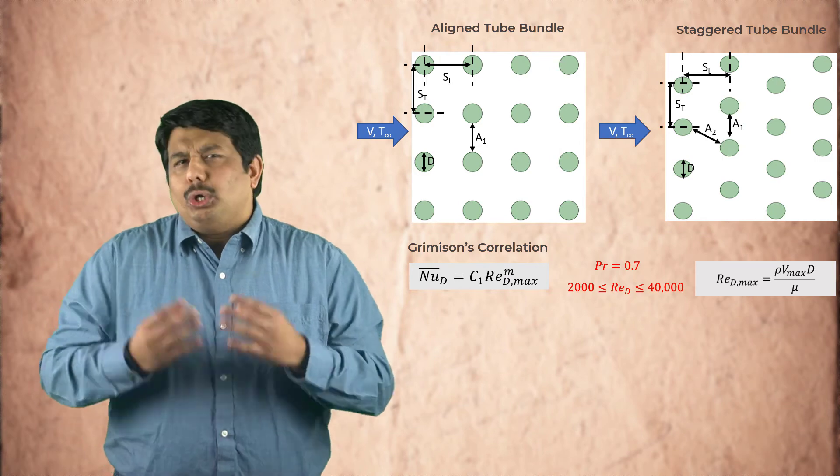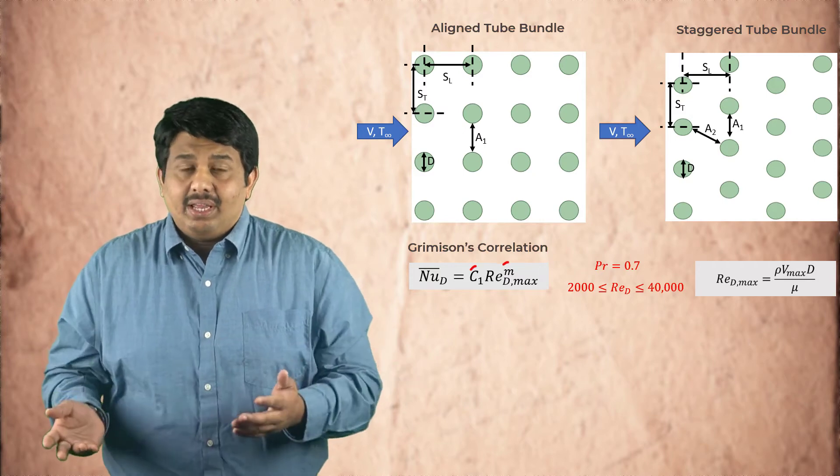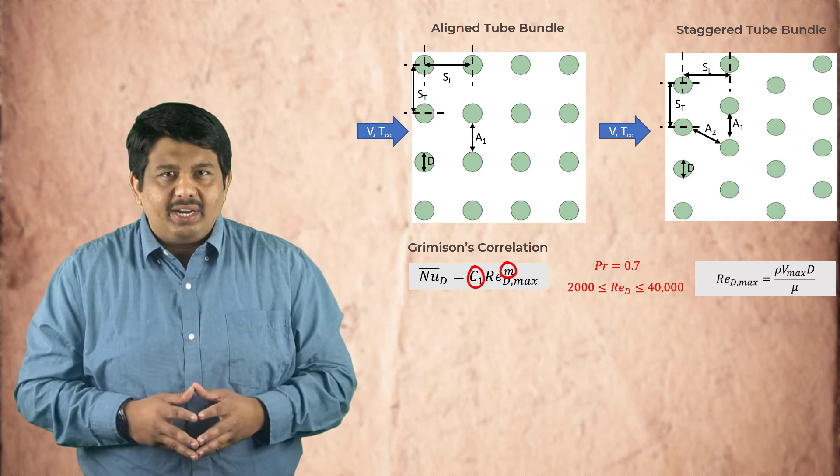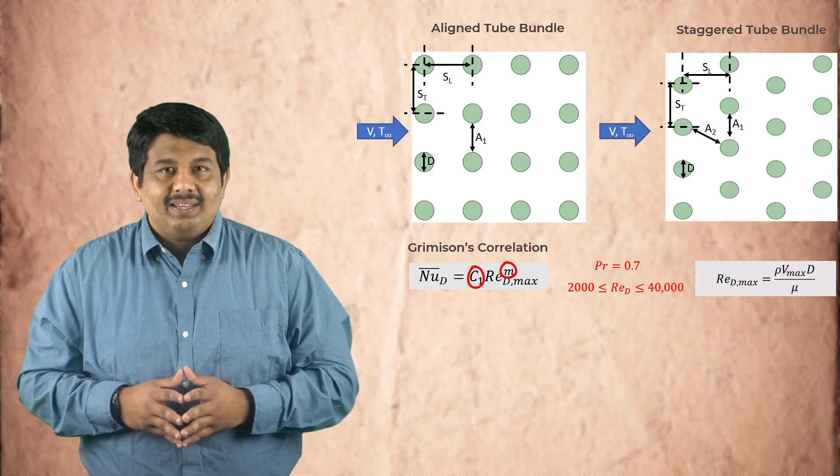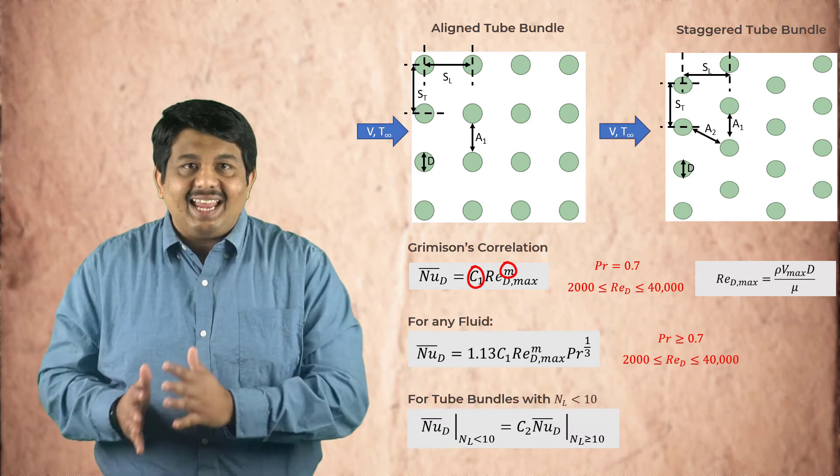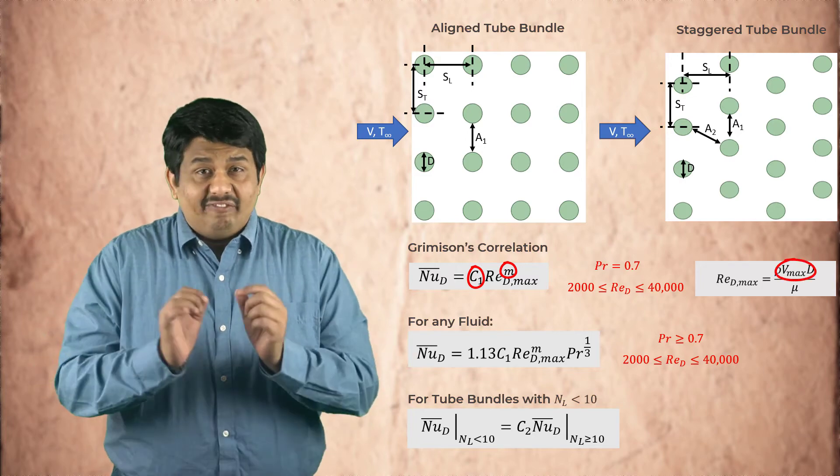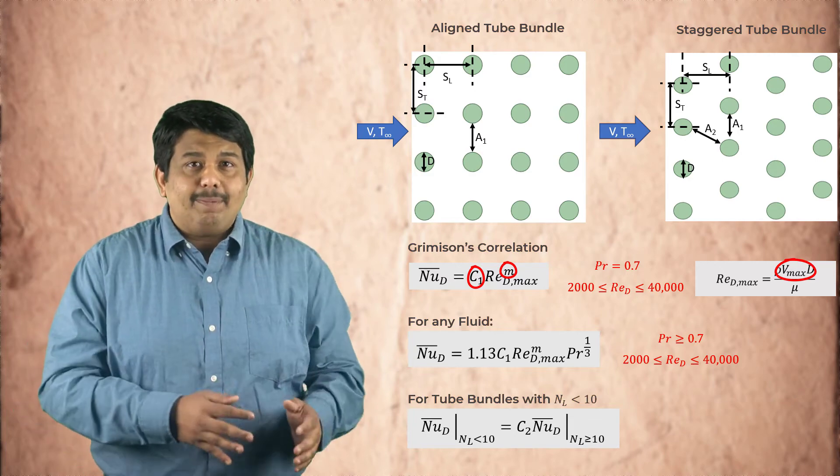This issue is not as pronounced in the staggered arrangement. Grimison proposed the following correlation to calculate the average Nusselt number for both arrangements. Here, the constants C1 and M are dependent on the type of tube arrangement and the longitudinal and lateral distances between the cylinders of the rows. This formula can be extended to any fluid and to tube bundles with less than 10 rows using the following correlation. The variable Vmax can be calculated from mass conservation principles and varies with the type of tube arrangement.